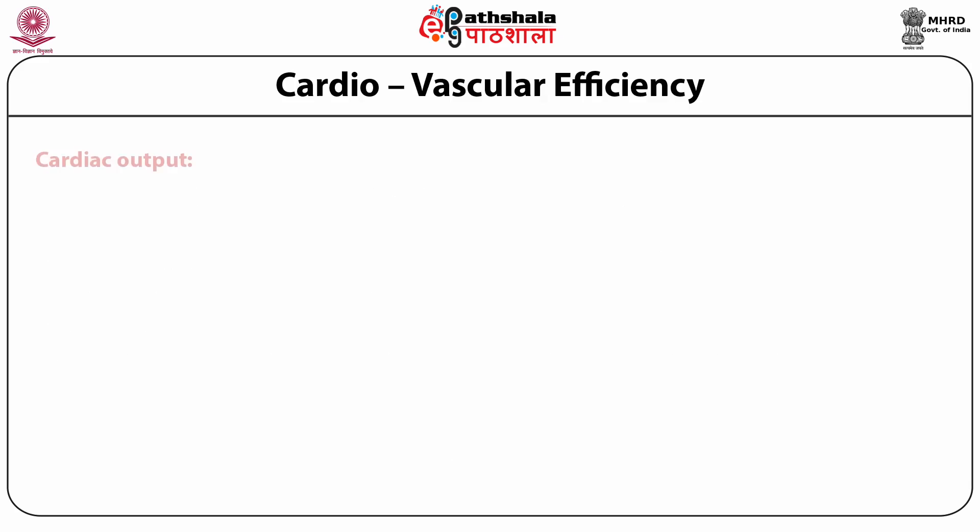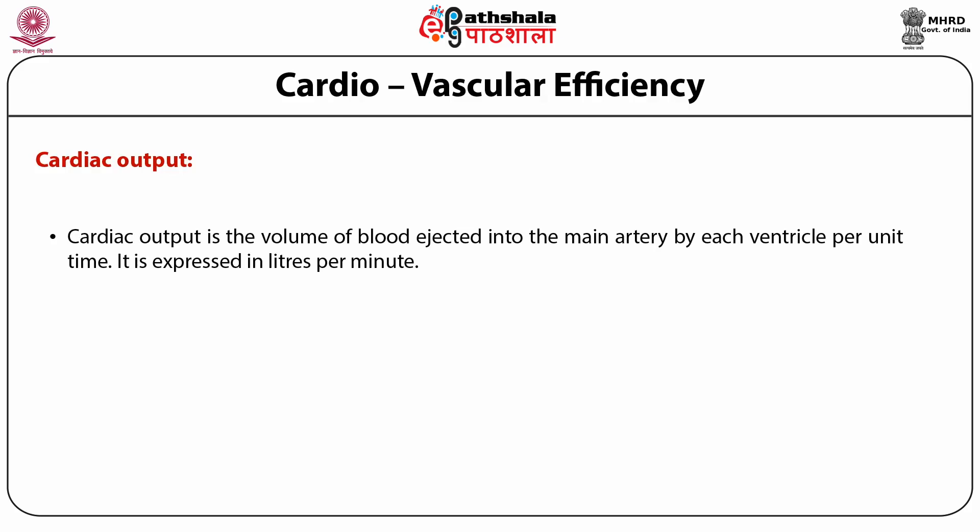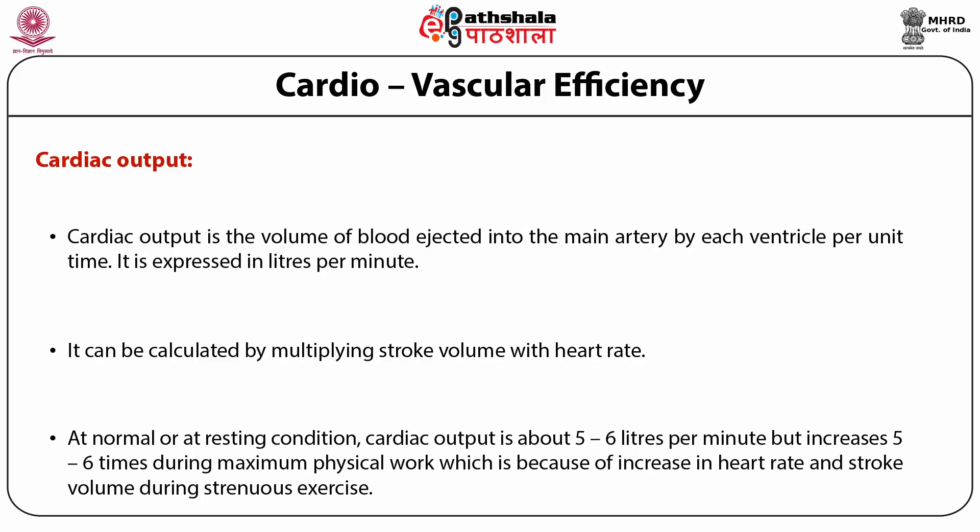Cardiac output is the volume of blood ejected into the main artery by each ventricle per unit time, expressed in liters per minute, calculated by multiplying stroke volume by heart rate. At rest, cardiac output is about 5 to 6 liters per minute, but may increase 5 to 6 times during maximum physical work due to increases in heart rate and stroke volume. Therefore, cardiac output becomes a measure of physical working capacity.